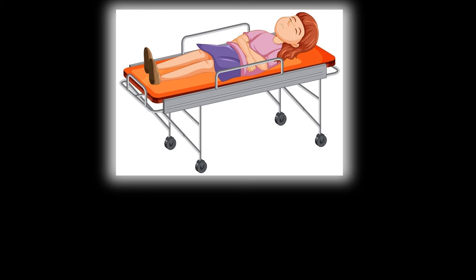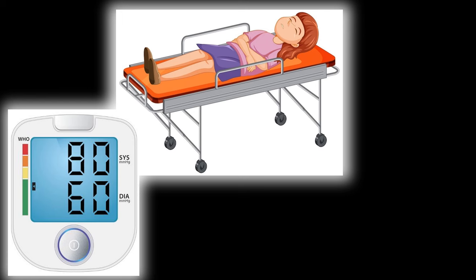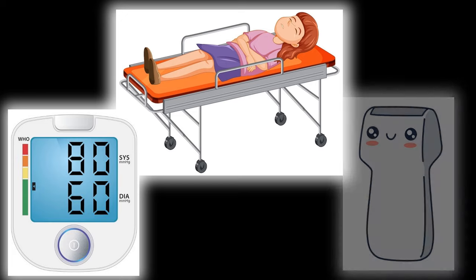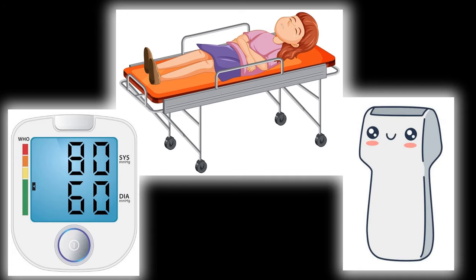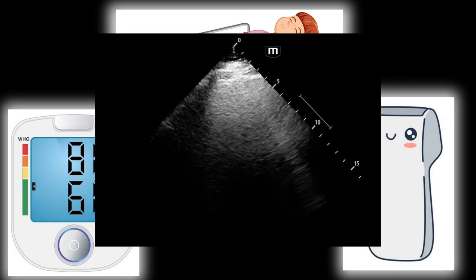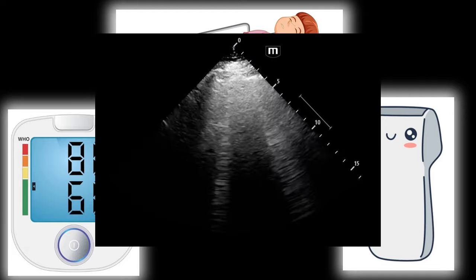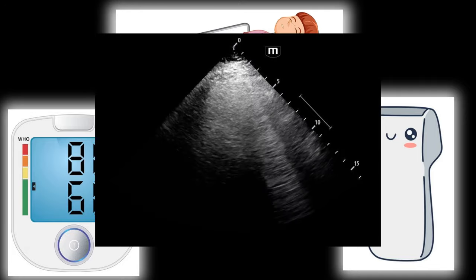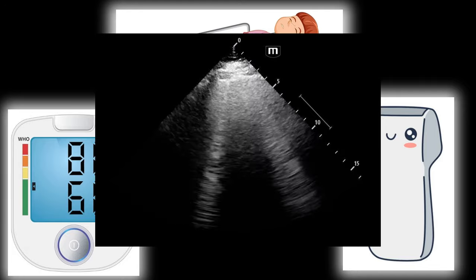Imagine this scenario: a patient is altered, looks sick, blood pressure in the 80s over 60s. She's placed in the resuscitation bay. Her airway and breathing are intact, but due to the undifferentiated hypotension, you grab the ultrasound transducer and place it on the chest to start the RUSH exam, but you get a poor parasternal view. You do some quick probe adjustments, confident that you'll get a good view, but you don't.